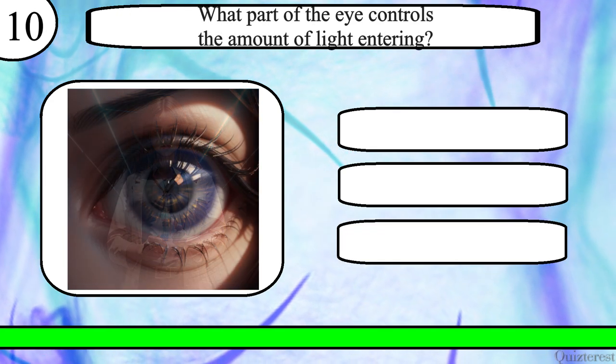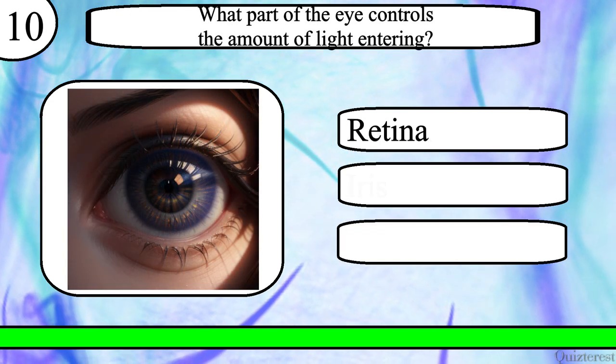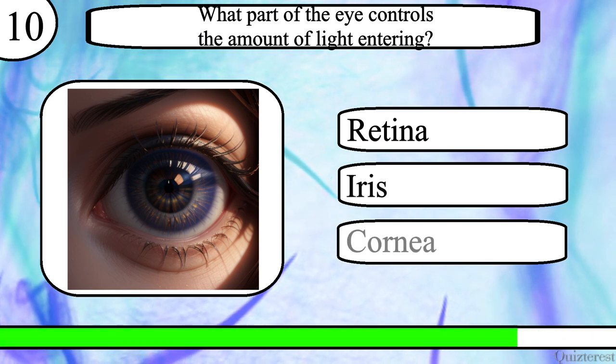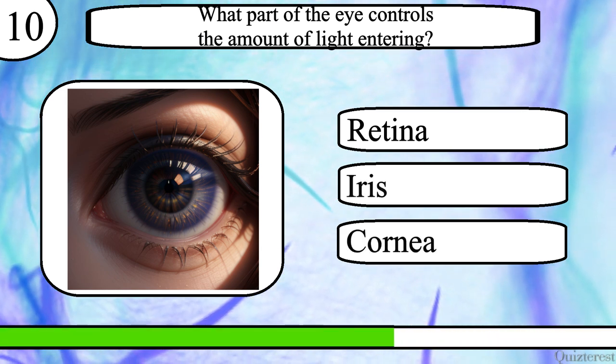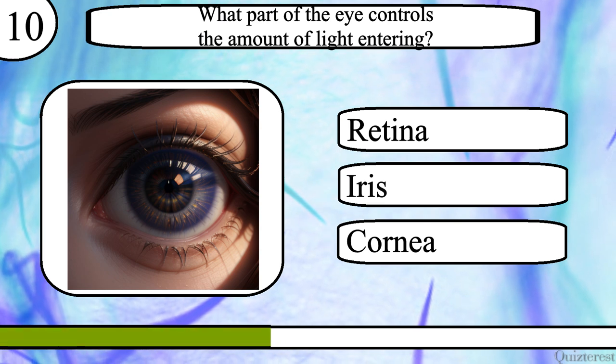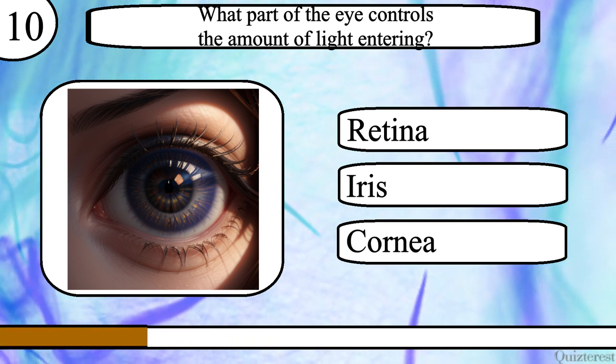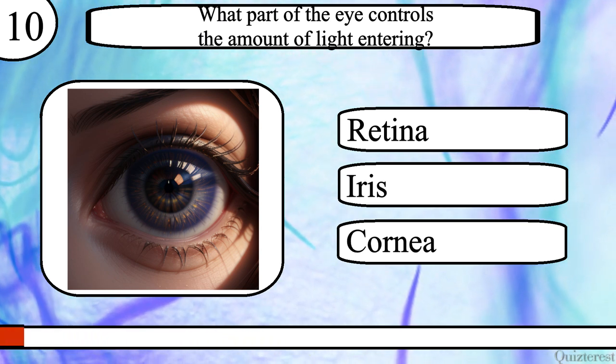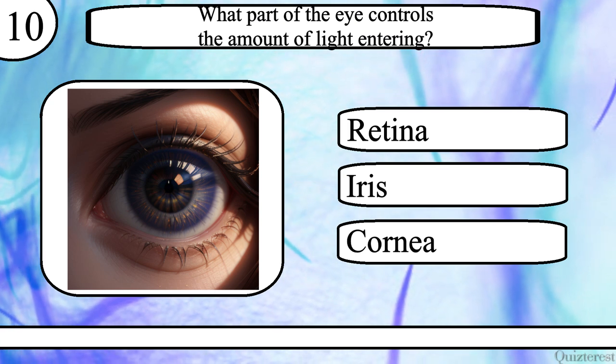Question 10. What part of the eye controls the amount of light entering? Retina, iris or cornea? The correct answer is iris.